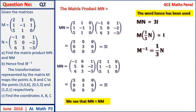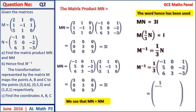We simplify by multiplying all entries of matrix N by one-third, giving M inverse as the matrix with entries: minus 1/3, 0, 1/3, 5/3, 0, minus 2/3, 2, 1, minus 1.